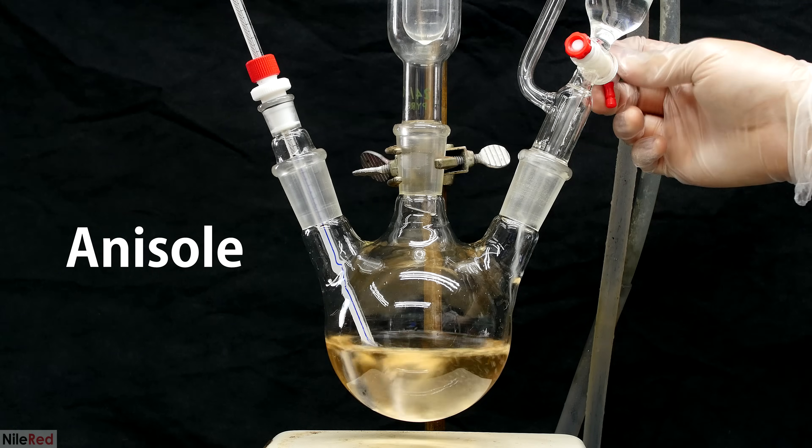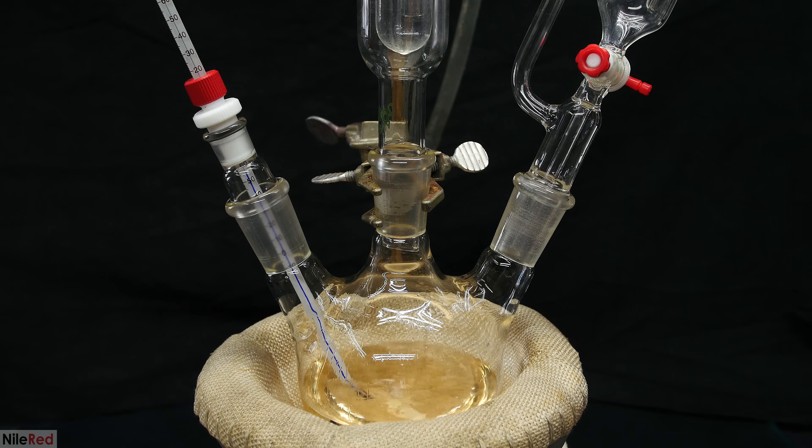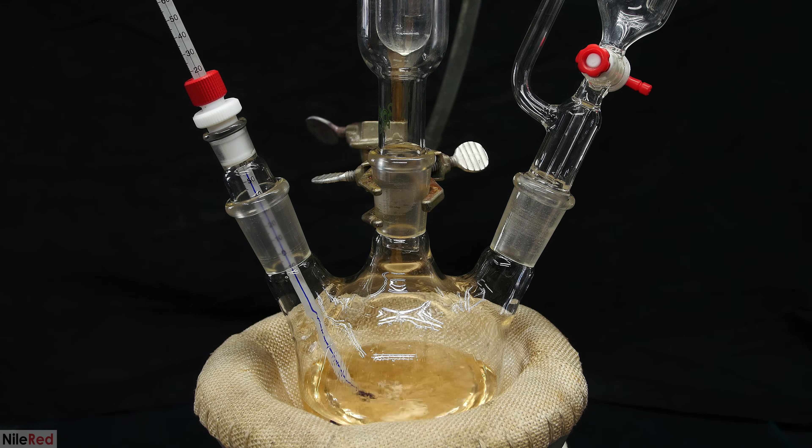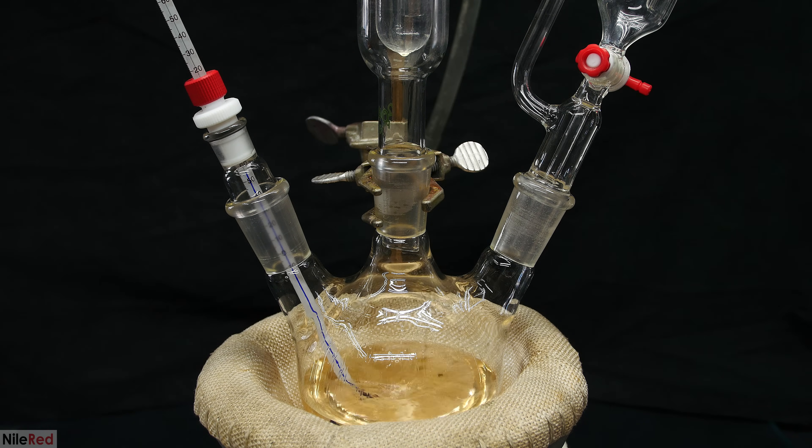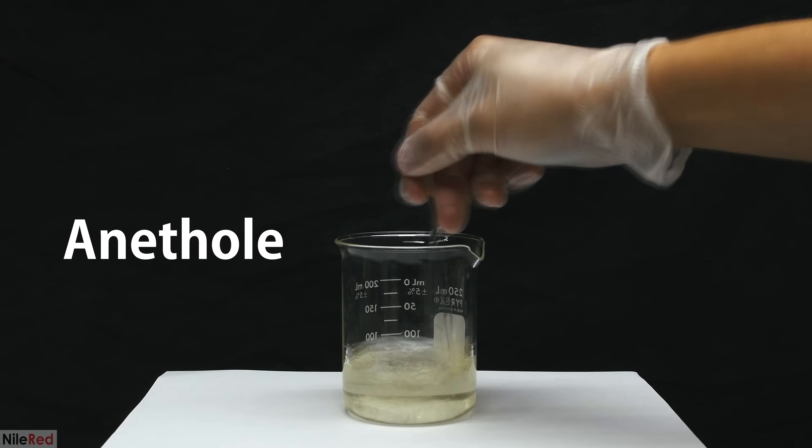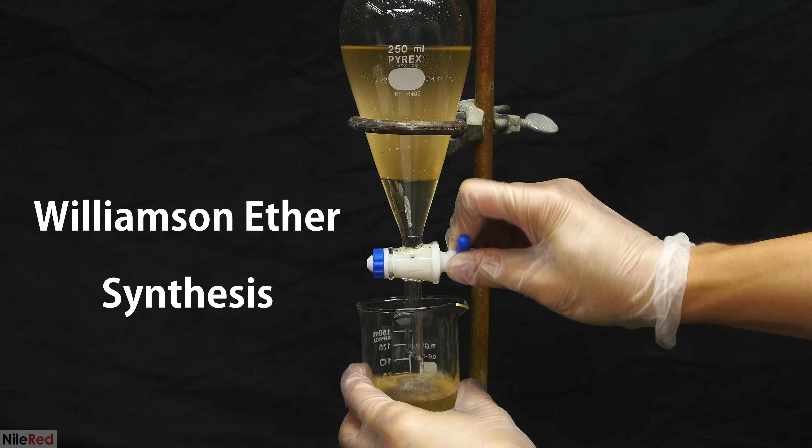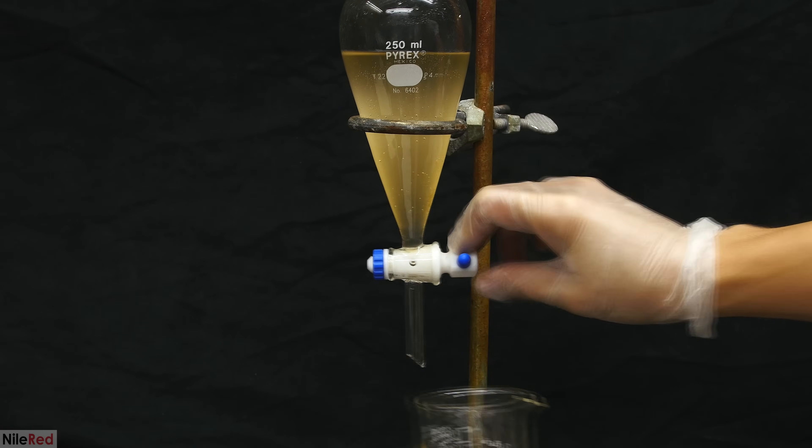Today we're making anisole, a somewhat nice smelling organic liquid. Anisole itself doesn't have many direct applications and is mostly used as a precursor to perfumes and pharmaceuticals. I plan to use the anisole to make anethole, which is 13 times sweeter than regular sugar. The reaction we'll be doing is called the Williamson ether synthesis, and I'll cover the mechanism later in the video.